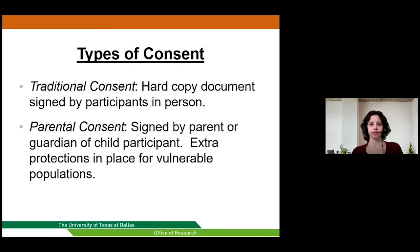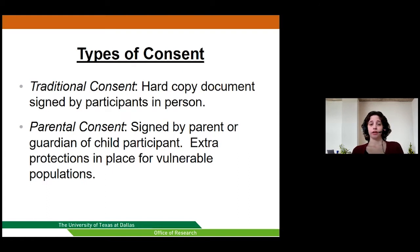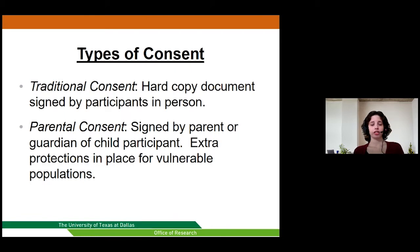There are different types of consent. Traditional consent is a hard-copy document signed by participants in person. The researcher provides the participant with the form, reviews it with them, and both parties sign if the participant decides to enroll. Participants should also receive a copy of that signed consent form for their records, which includes the researcher's contact information, IRB information, and all the details they might need after leaving the study.